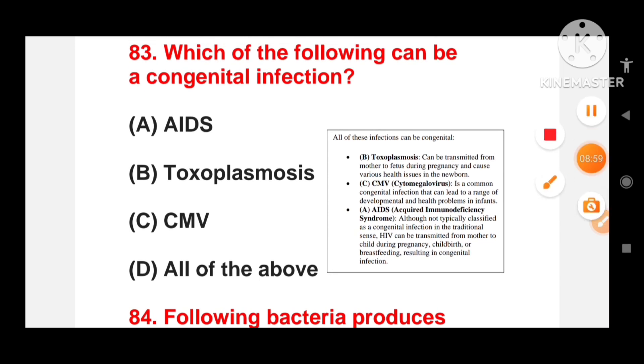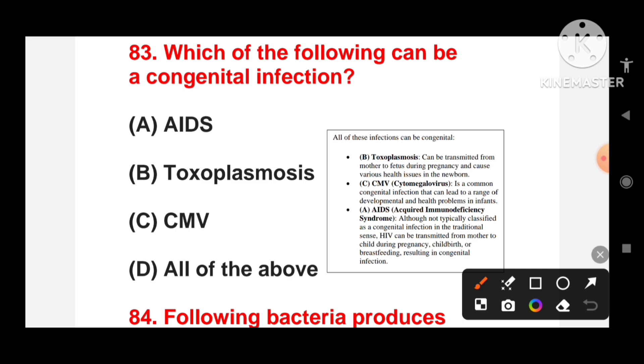Which of the following can be congenital infection? AIDS, toxoplasmosis, CMV cytomegalovirus, or all of the above? All of these infections can be congenital. Toxoplasmosis can be transmitted from the mother to fetus during pregnancy and cause various health issues in the newborn. Cytomegalovirus is a common congenital infection that can lead to a range of developmental and health problems in infants. And AIDS, although not typically classified as a congenital infection in the traditional sense, HIV can be transmitted from mother to child during pregnancy, childbirth or breastfeeding.